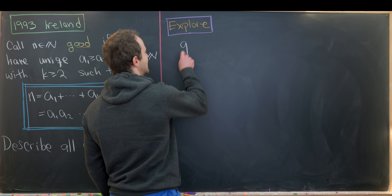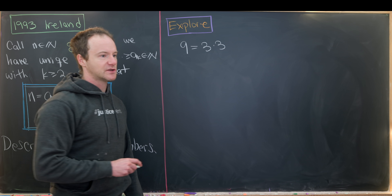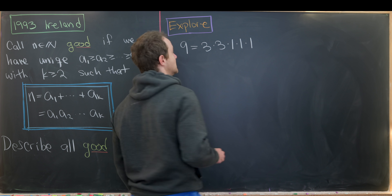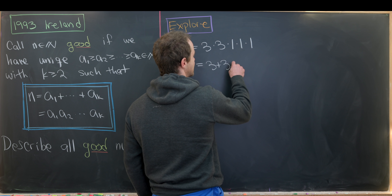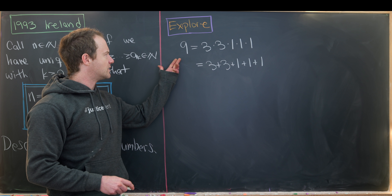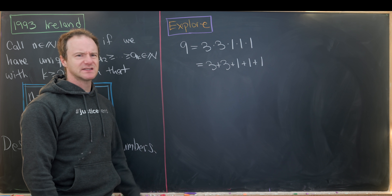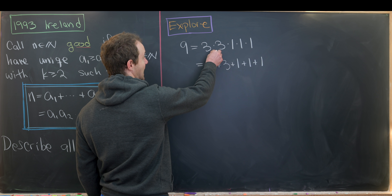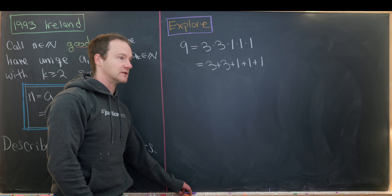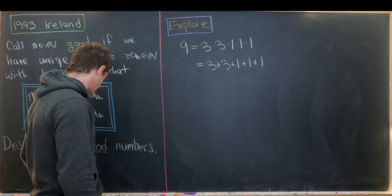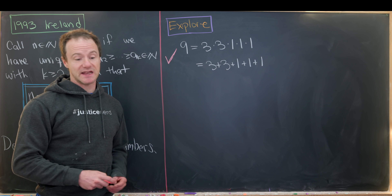Let's start with the number 9. Nine factors as 3 × 3, but 3 + 3 is only 6, so we include ones: 3 × 3 × 1 × 1 × 1 = 3 + 3 + 1 + 1 + 1 = 9. The only other construction would use 9 times a string of ones, but 9 plus those ones would exceed 9. So nine is indeed a good number.